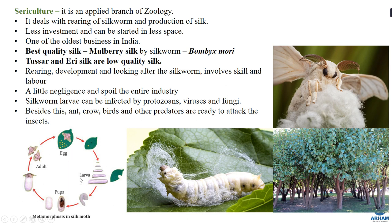The life cycle of the silk moth involves the adult moth laying eggs on mulberry leaves. When these eggs hatch, they form larvae that feed on mulberry leaves. The larvae then form a cocoon and enter the pupa stage, from which an adult moth again emerges. Silk production comes mainly from the threads produced when the larva forms the cocoon. The threads obtained from this cocoon are used in the silk industry for production of silk.